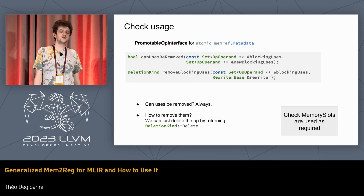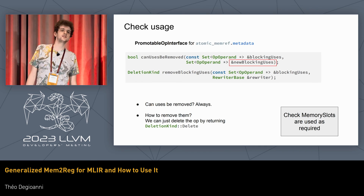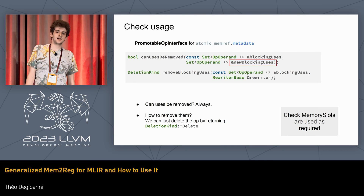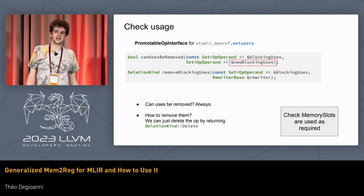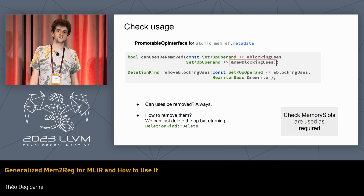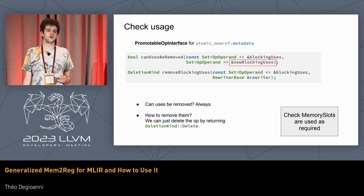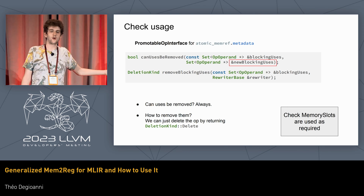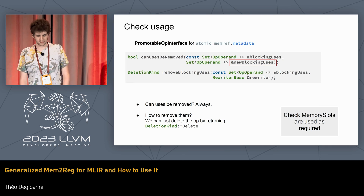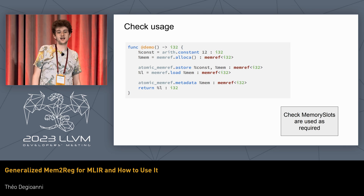One interesting argument in canUsesBeRemoved is newBlockingUses. This allows you to add new blocking uses that you want removed to effectively perform promotion. This is typically useful if your metadata is used by other operations that should also be taken care of. So we've handled metadata. Now for the actual important part: how to take care of the store and load operations that do touch memory.